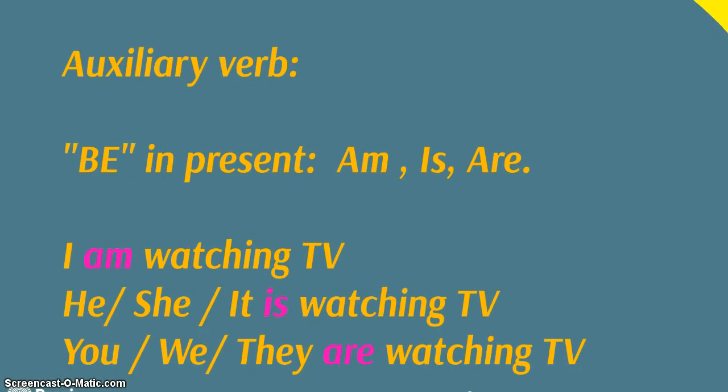In the present continuous we have an auxiliary verb, the verb to be, and we conjugate it. We use it in the present so we're going to use am, is and are. For example, I'm watching TV, he or she, it is watching TV, you, we, they are watching TV.